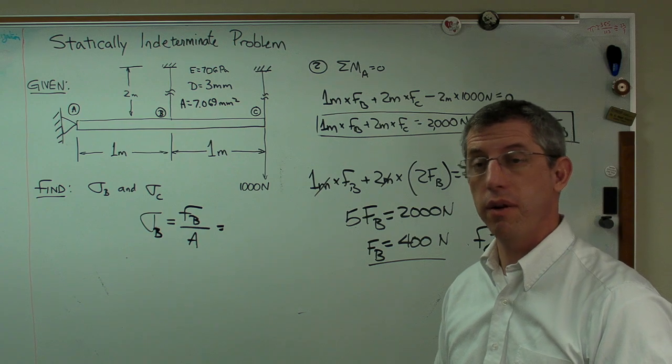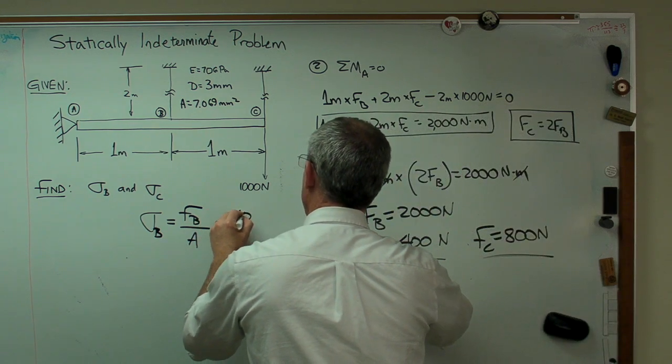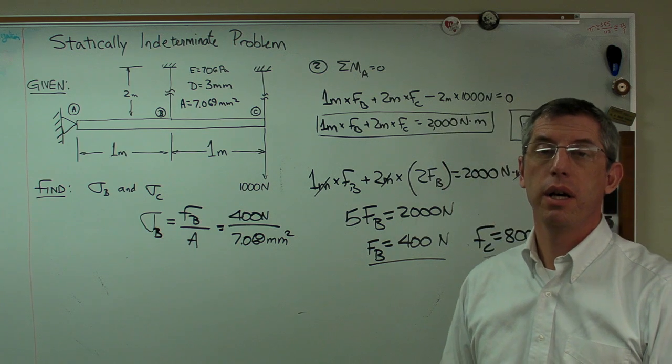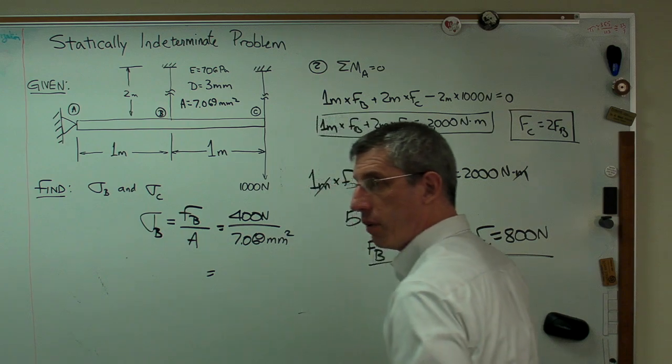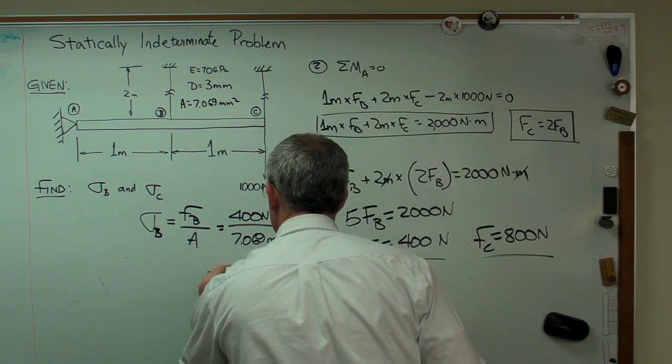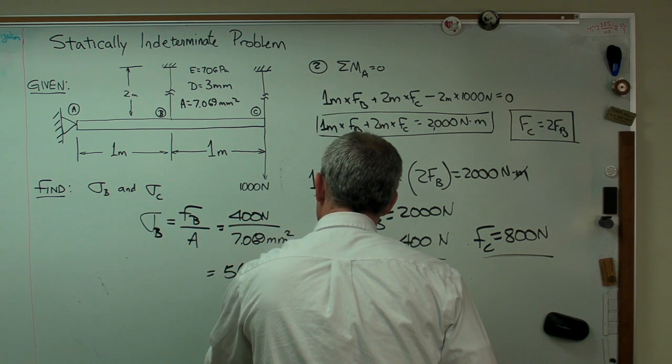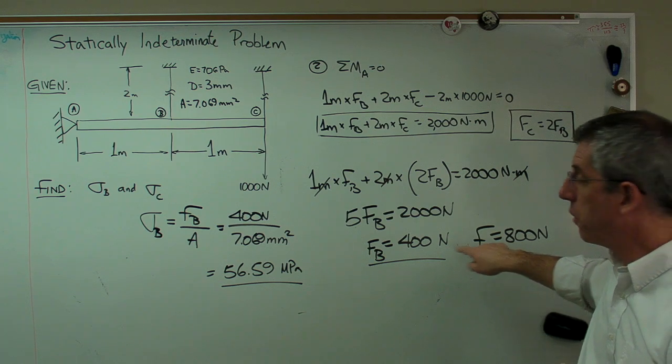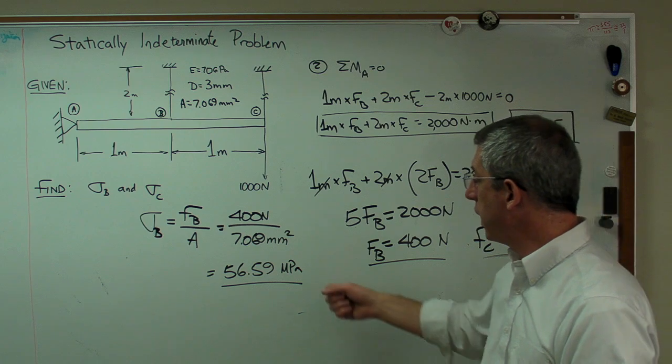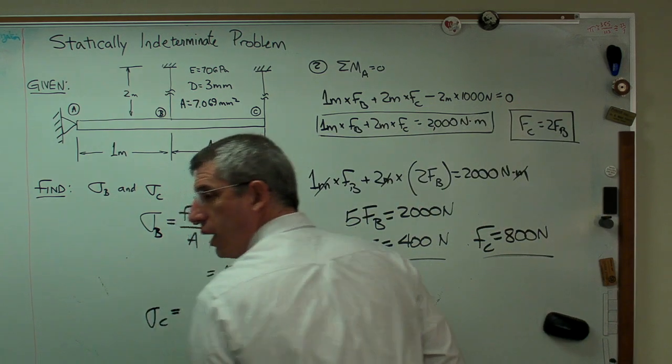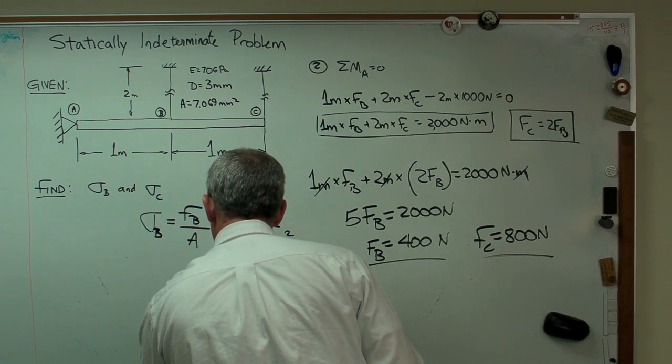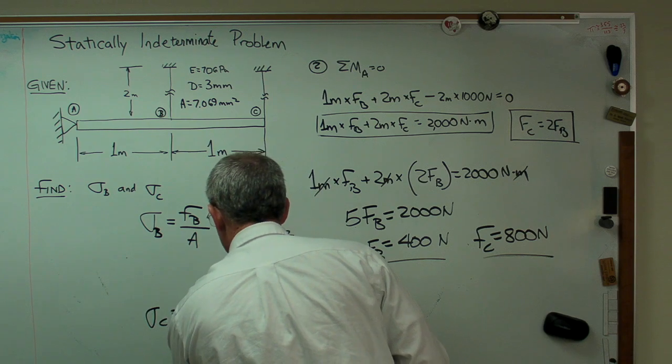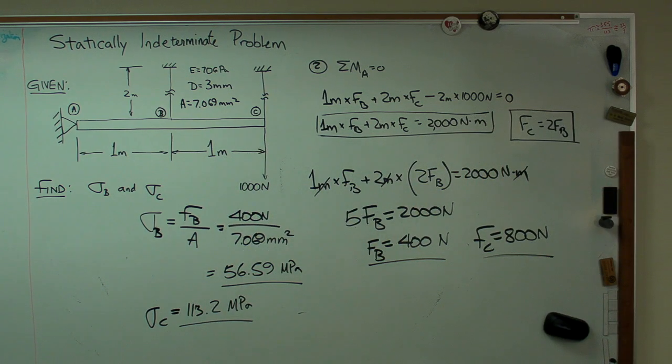So that's 400 newtons over 7.069 millimeters squared. Newtons over millimeters squared is going to be megapascals. So we write that out, and it's going to be 56.59 megapascals. Since the force in C is twice the force in B, and the area is the same, we know the stress in C has to be twice the stress in B. And that works out to 113.18 megapascals. There we have it. There we go. Thank you.